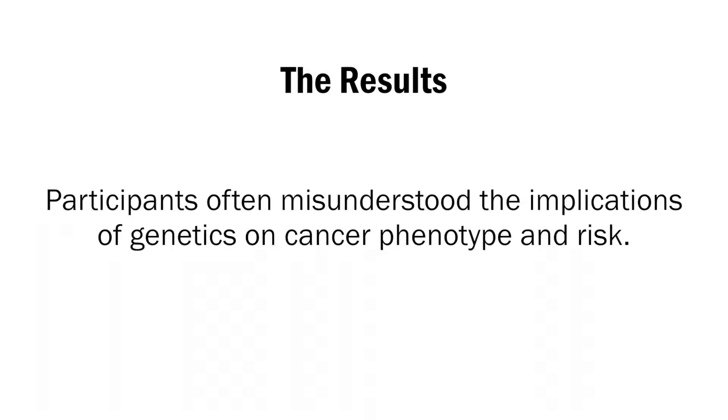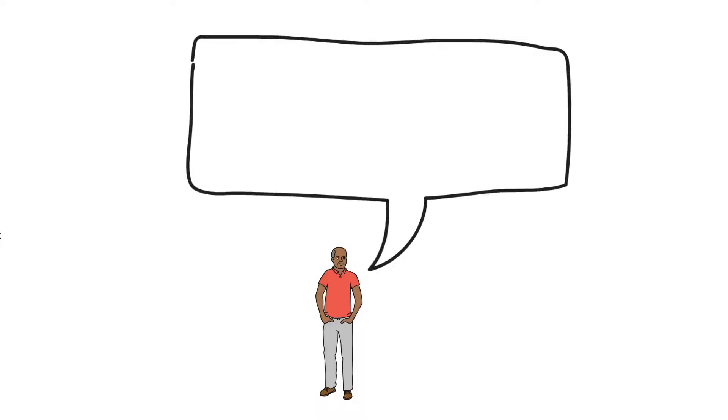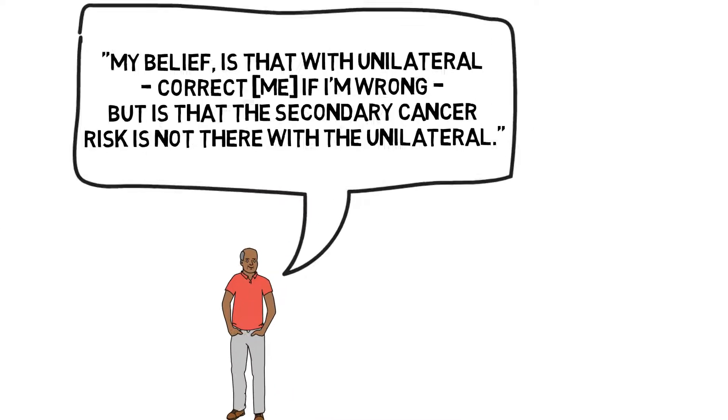Participants often misunderstood the implications of genetics on cancer phenotype and risk. For example, unilateral retinoblastoma, which affects one eye, can be heritable. However, this was lost on some individuals. My belief is that with the unilateral, correct me if I'm wrong, but is that the secondary cancer risk is not there with the unilateral.